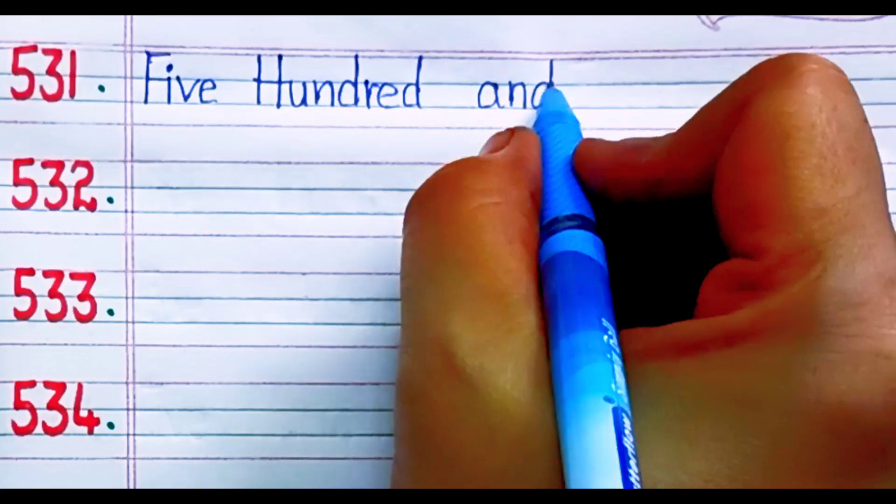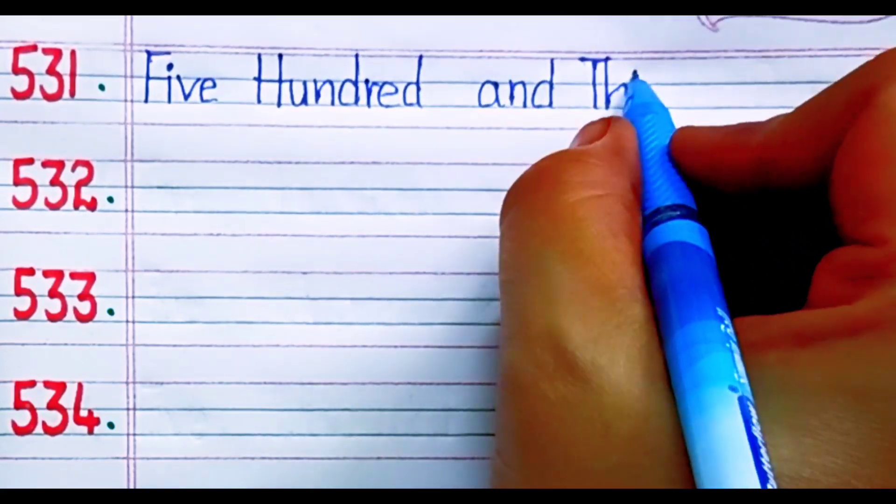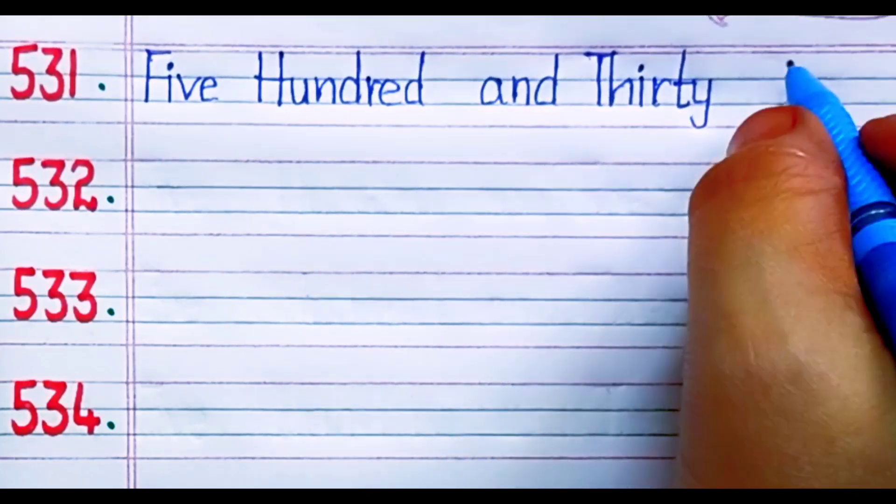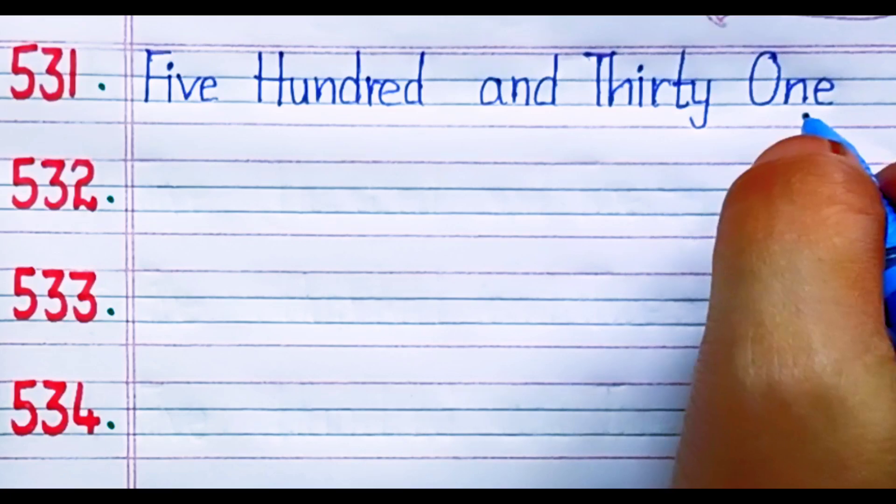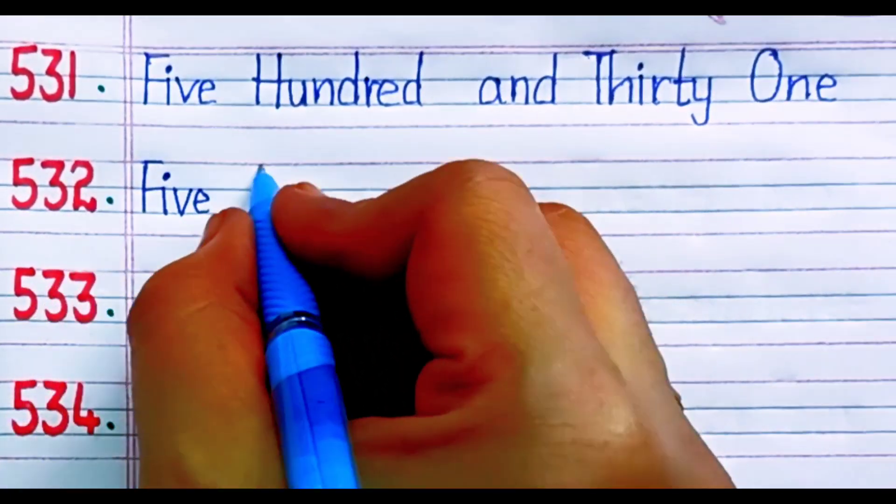531, five hundred and thirty-one. T-H-I-R-T-Y, thirty. O-N-E, one, 31. 532, five hundred and thirty-two. T-H-I-R-T-Y, thirty. T-W-O, two, 32.